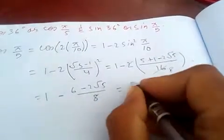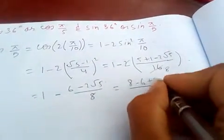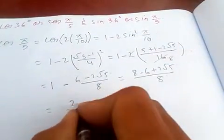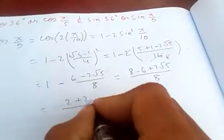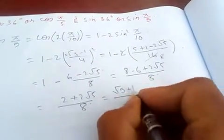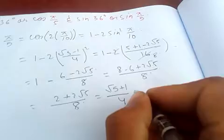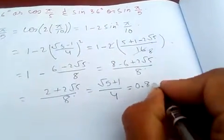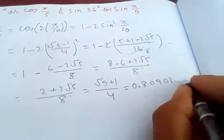So if you simplify it, 6 plus 2√5, which is 8, so this is (2 + 2√5)/8, which is (√5 + 1)/4. So if you calculate this, it is approximately 0.80901 and so on.